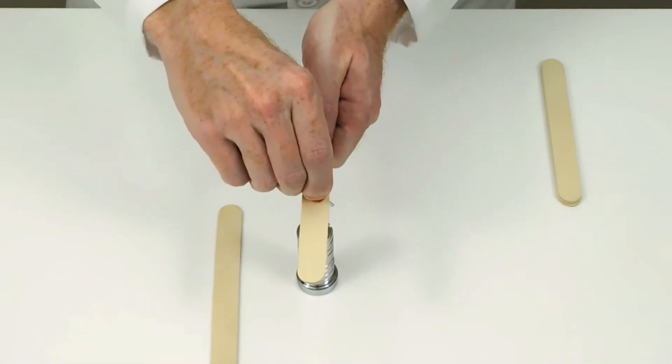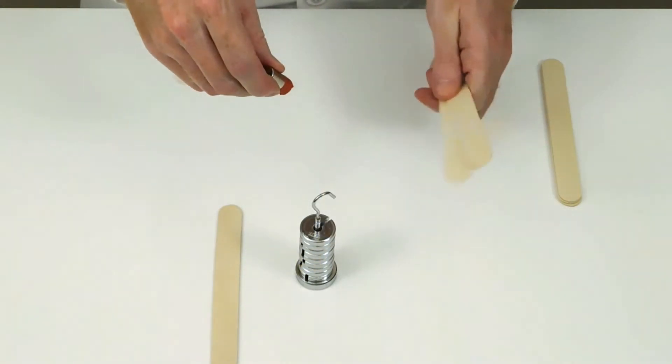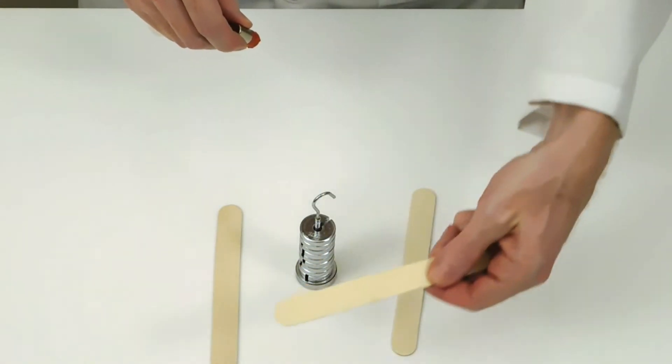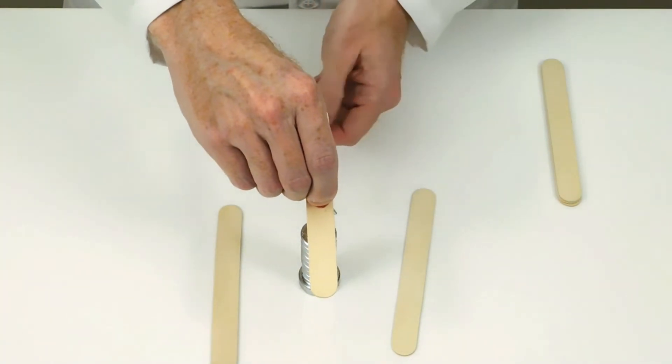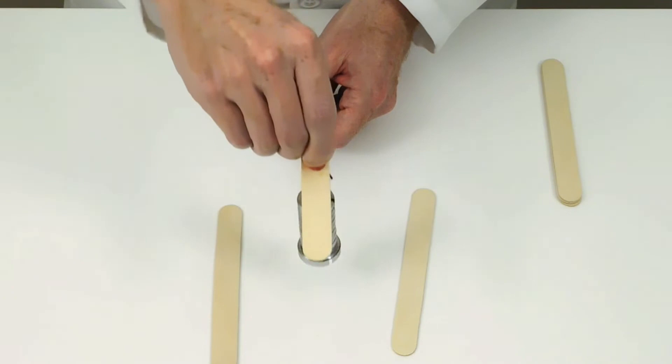If we separate this medium power magnet from the hook with two wooden sticks, then the magnetic force is too weak, but if we use just one stick, then the force is large enough.